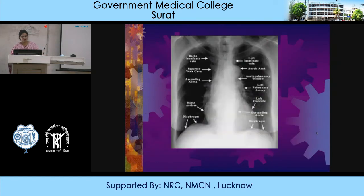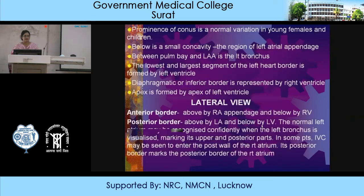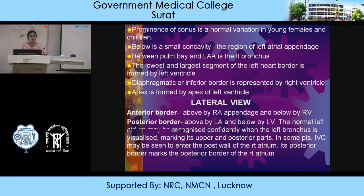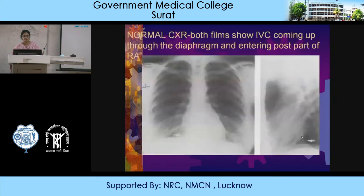The left heart border is formed by: the aortic arch, pulmonary bay, left atrial appendage, and the left ventricle. In the lateral view, the anterior border is formed above by the right atrial appendage and below by the right ventricle. The posterior border is formed above by the left atrium and below by the left ventricle. The normal left atrium may be confidently recognized when the left bronchus is visualized, as it marks the upper and posterior part of the left atrium. The posterior border of the IVC marks the posterior border of the right atrium.